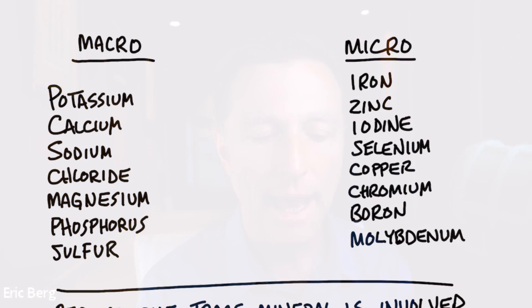Let me first explain some of the macro minerals so you can differentiate the two. Potassium, for example — we need massive amounts of potassium, so that would be a macro mineral. Calcium, sodium, chloride, magnesium, phosphorus, sulfur — those are all minerals we need in large amounts. The micro minerals would be like iron, zinc, iodine, selenium, copper, chromium, boron, and manganese. That's a short list of trace minerals — there are many others, but those are the common ones.